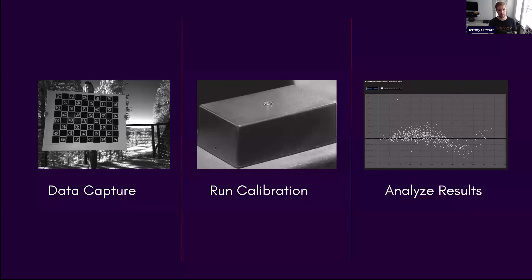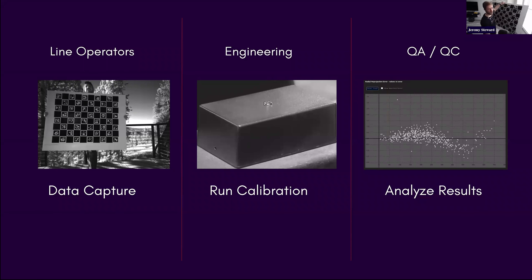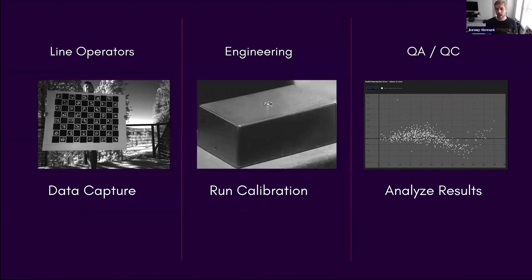Since these are walled-off systems, you have line operators doing data capture — we all have a checkerboard sitting in an office or cabinet somewhere. You then have engineering whose primary goal is to build this black box system that line operators have to interact with, but fundamentally don't spend their time inside. And lastly, you have QAQC, which is often separate from both engineering and line operators. They analyze results, check statistics and analytics, and give a pass/fail criteria on whether your sensors or robotic platform is calibrated.